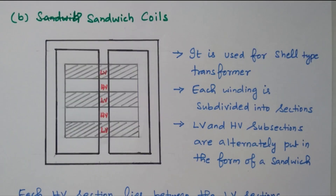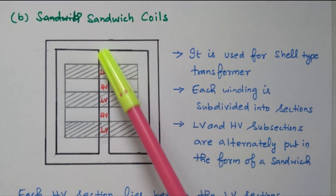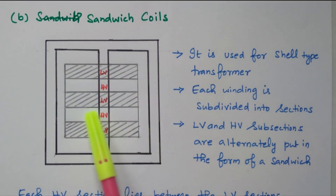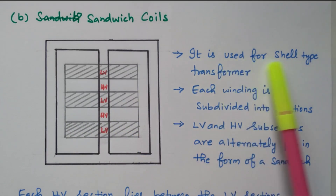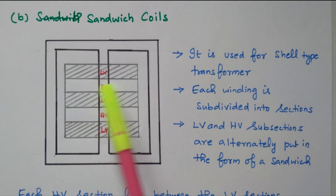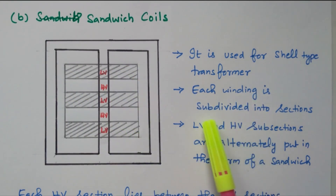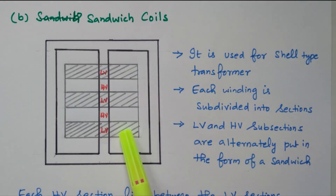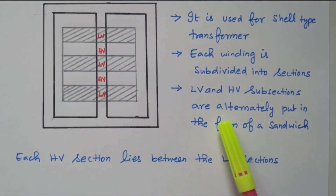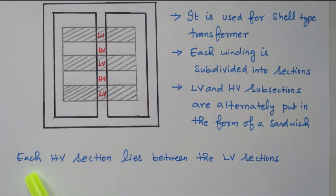In the sandwich type, at the center limb the windings are alternated: first low voltage, then high voltage, then low voltage, then high voltage, then low voltage — like a sandwich. It is not overlapped. This is used for the shell type transformer. The shaded portions are the low voltage windings and the normal portions are the high voltage windings. Each winding is subdivided into sections, and the LV and HV subsections are alternatively arranged. Each high voltage section lies between the low voltage sections.